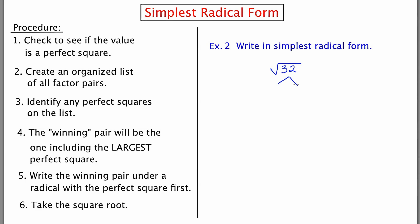So I'm going to think to myself, what are all the different numbers that multiply to 32? 1 and 32, 2 and 16, 4 and 8, and that's it. Step 2, identify any perfect squares on the list. Well, on this list, there are three perfect squares: 1, 16, and 4.